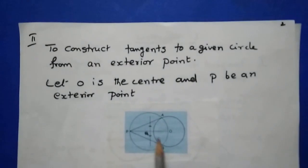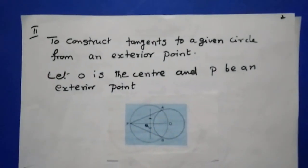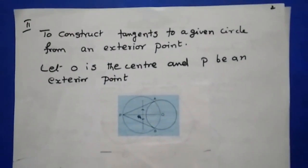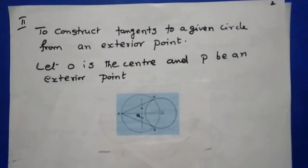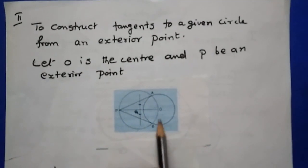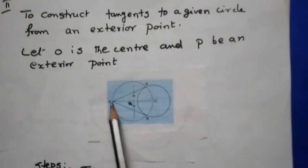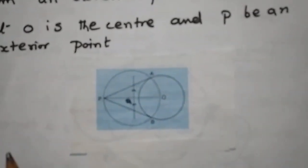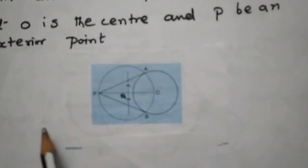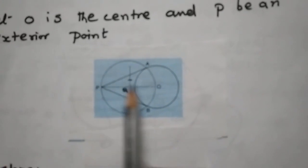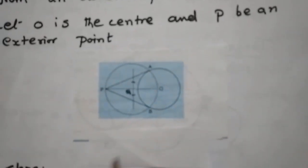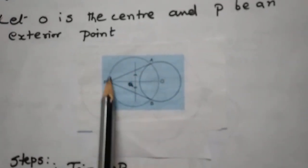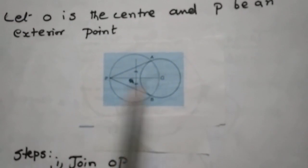Next, you are going to construct two tangents from a point P, an exterior point. Let O be the center of the circle and P the given point. First, join OP, then draw the perpendicular bisector of OP.